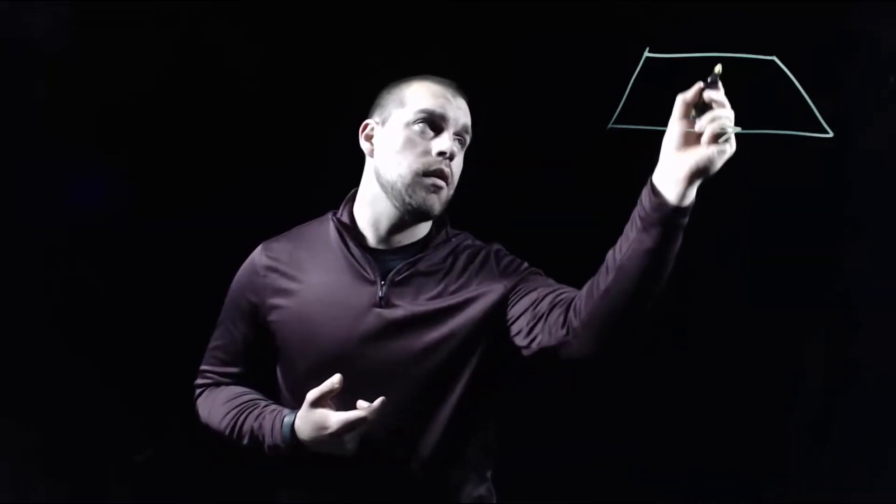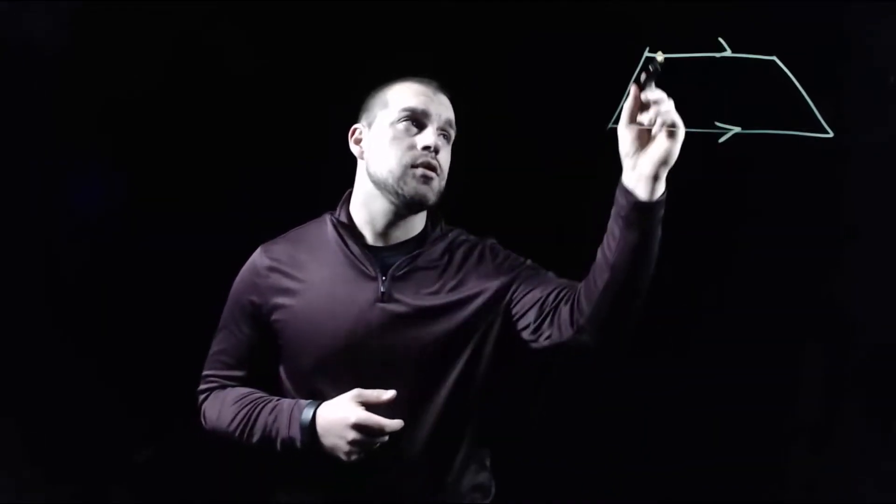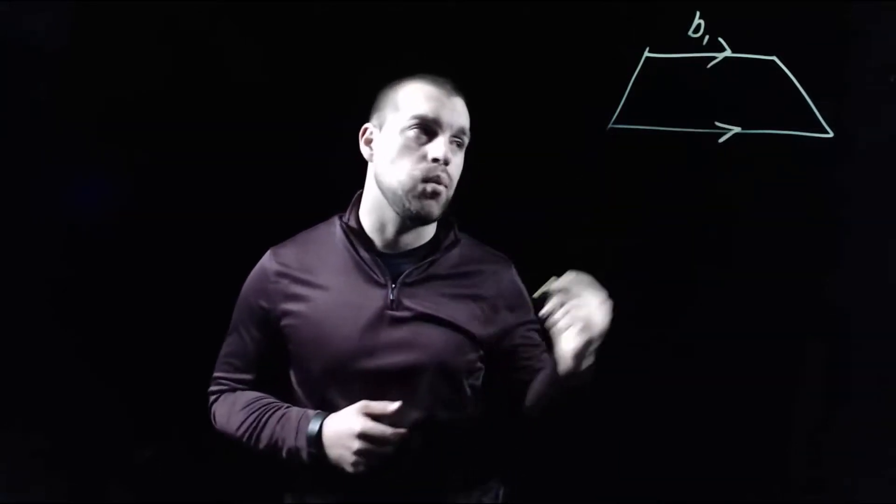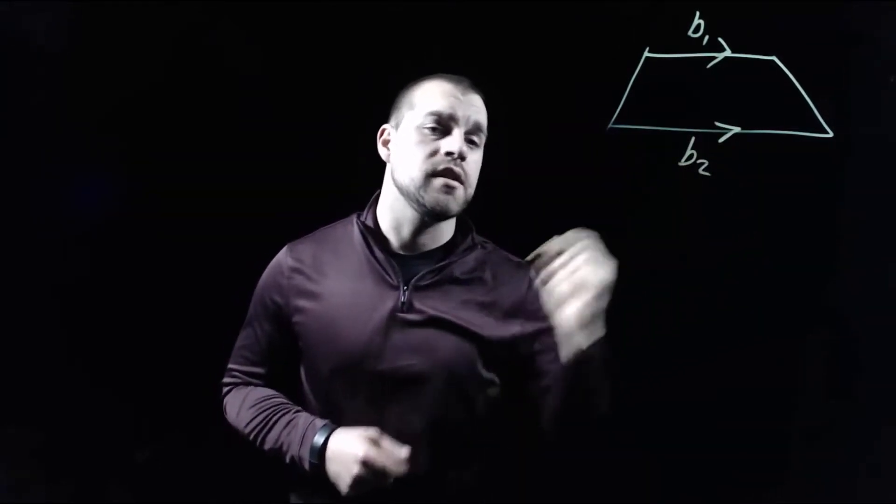As we're looking at a trapezoid, we've got two sides that are parallel to each other and we call those two sides our bases. So it's one across the top, I'm going to call base one or just b sub one, and across the bottom I'm going to call this base two.